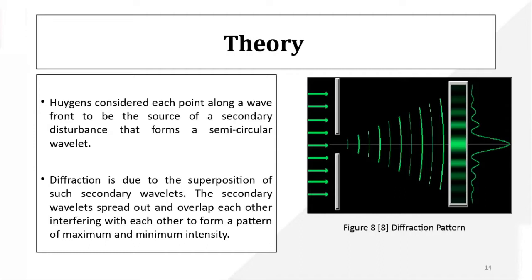Light travels in the form of wavefronts according to Huygens' principle. You get the central maxima and n-th order maximas — first order, second order, third order — but all are of unequal intensity. The central maxima has maximum intensity, and intensity decreases as you move away from the central maxima.